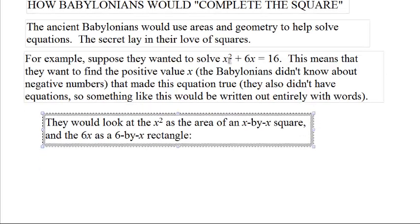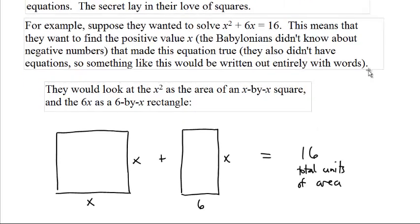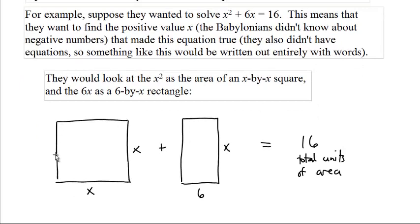They would look at the x squared as the area of an x by x square and the 6 times x they would look at as a 6 by x rectangle. So x squared plus 6x equals 16 looks like this. We have this area of an x by x square plus this area of a 6 by x rectangle is 16 total units of area.